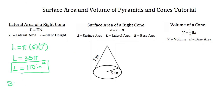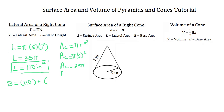Now let's calculate the surface area. Surface area equals the lateral area — which is 110 square inches — plus the base area. Since the base is a circle, we use the area formula pi times radius squared: pi times 5² equals 25π, which comes out to 78.5 square inches. Adding those together, the total surface area for this cone is 110 plus 78.5, which equals 188.5 inches squared.